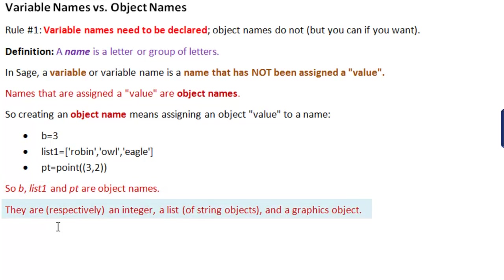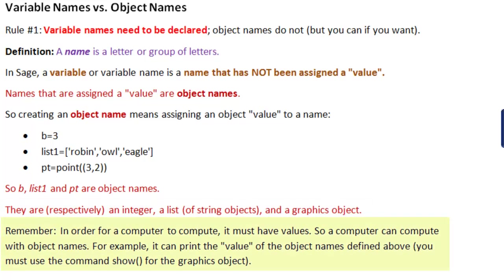They are respectively: B is an integer, list one is a list of string objects, and PT is a graphics object. Remember, in order for a computer to compute, it must have values. So a computer can compute with object names. For example, it can print the value of the object names defined above. You must use the command show for the graphics object.